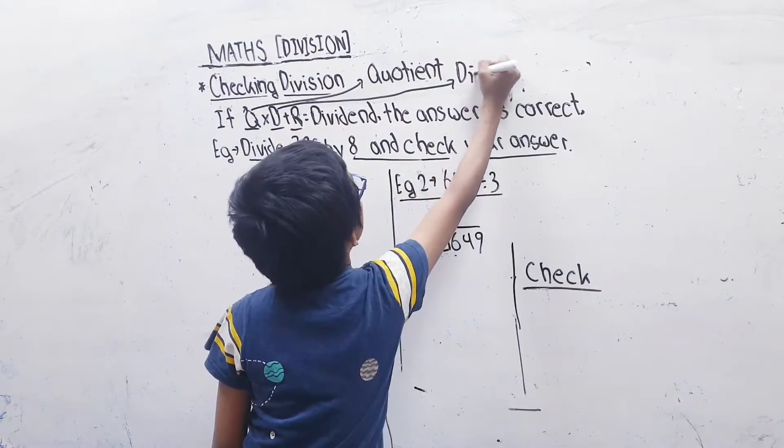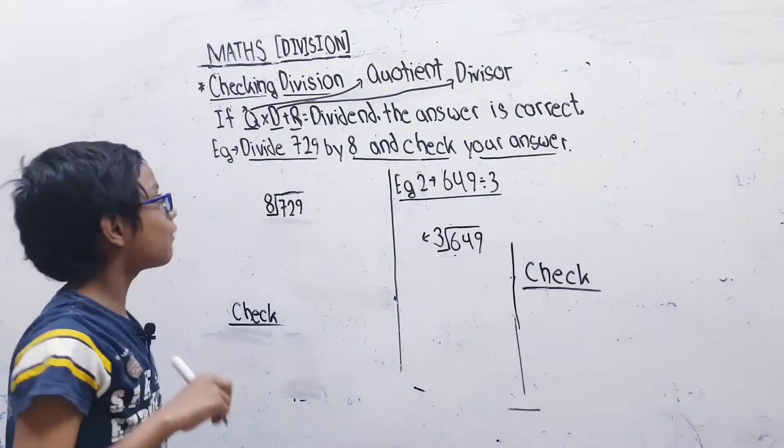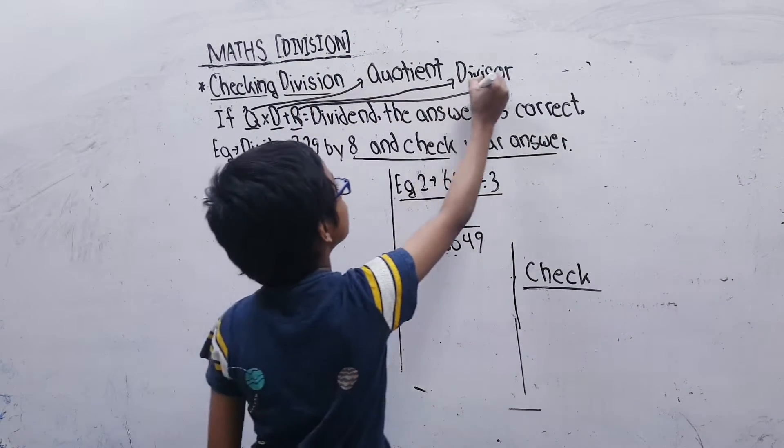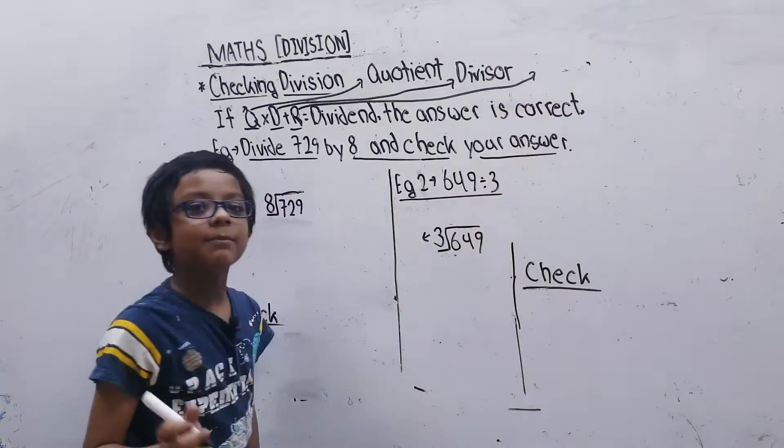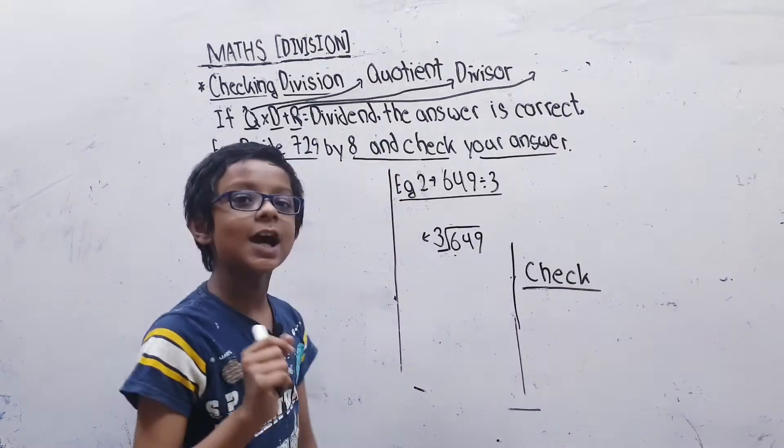R is remainder. Divisor is what we divide by, and remainder is what remains when we divide.